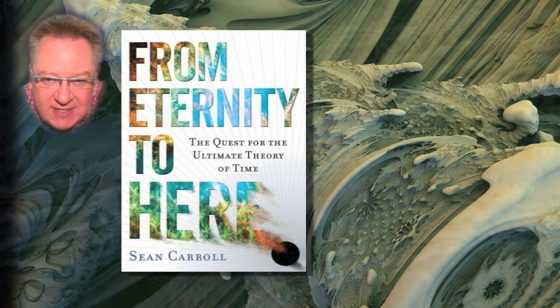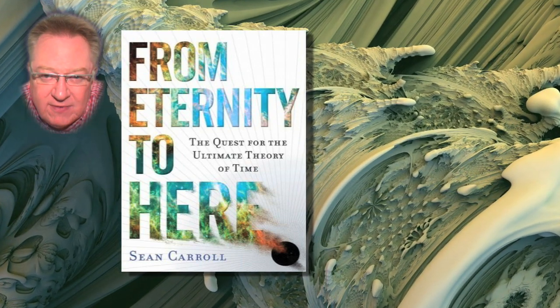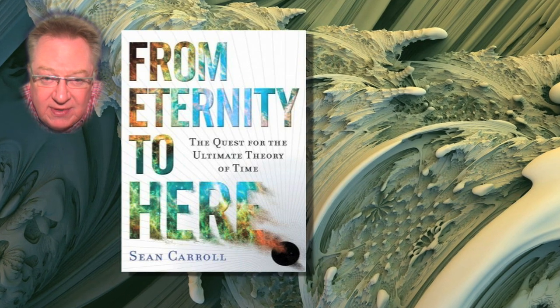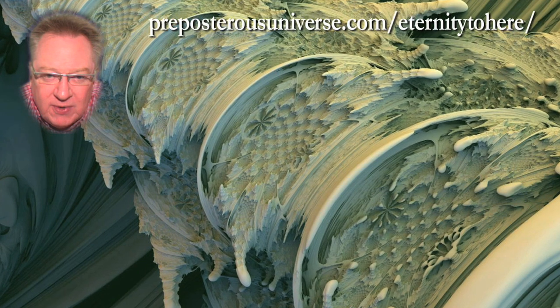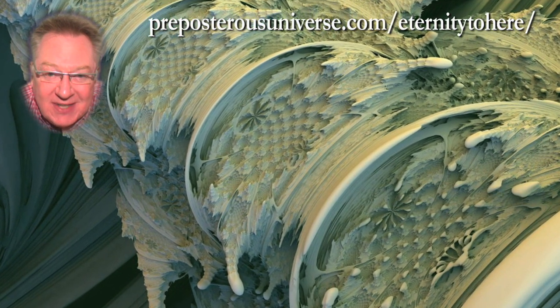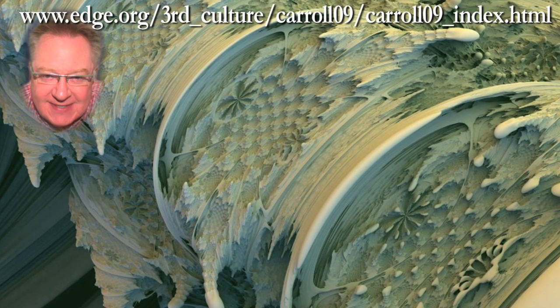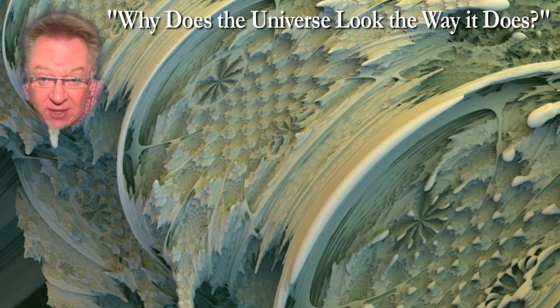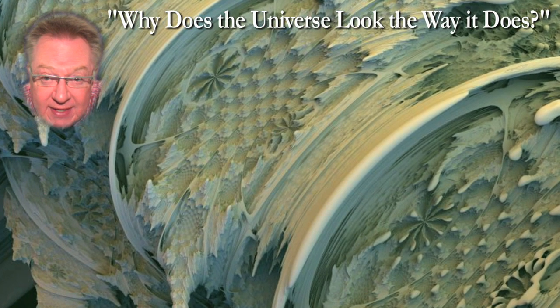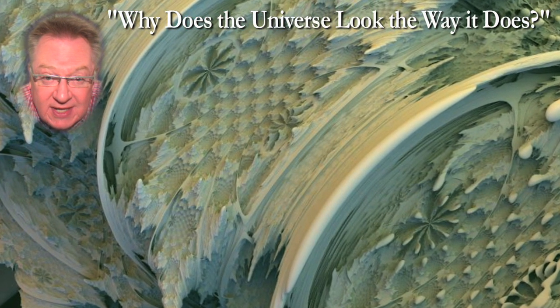I'm also really pleased that Sean Carroll now has a book out called From Eternity to Here: The Quest for the Ultimate Theory of Time. I'm going to put up a link to his blog telling us a bit more about his book — his blog is at preposterousuniverse.com. I also want to put up another link at edge.org, which you can click on in the description box below this video. The second page shows a 24-minute video of Sean Carroll discussing his ideas, in a presentation called Why Does the Universe Look the Way It Does? There's also a full text transcription of the presentation there, very useful for future reference.